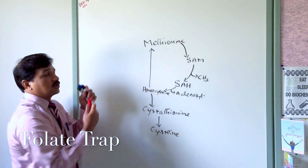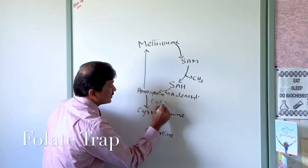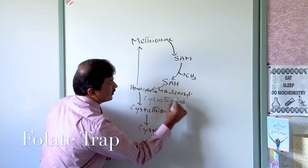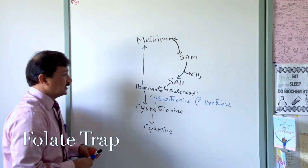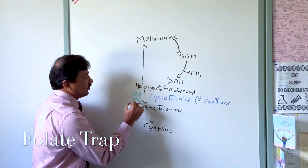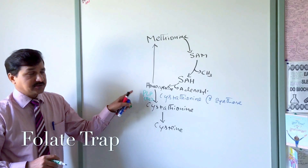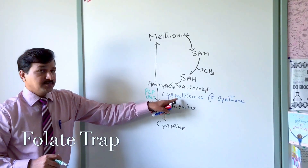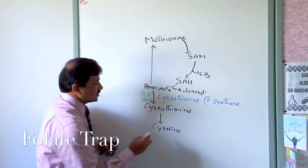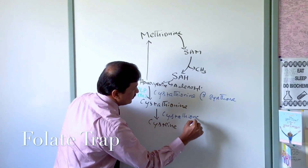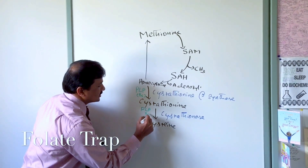To convert homocysteine to cysteine, we need an enzyme called cystathionine beta synthase. This enzyme requires a coenzyme — pyridoxal phosphate (PLP), which is the active form of vitamin B6. With sufficient PLP and active cystathionine beta synthase, homocysteine is converted into cystathionine. Then another enzyme — cystathionase — also requiring PLP, converts cystathionine into cysteine.